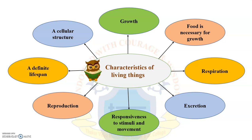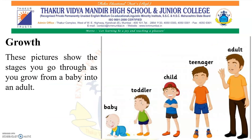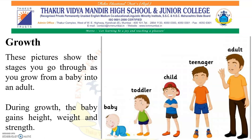Let us start with the very first characteristic, that is growth. These pictures show the stages you go through as you grow from a baby into an adult. The stages are baby, toddler, child, teenager, and finally adult. During growth, the baby gains height, weight, and strength.